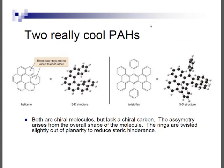Two cool polycyclic aromatic hydrocarbons are helicene and squished fulvene. All carbons are sp2 hybridized — they're fused benzene rings. They cannot have chiral carbons, but the molecules themselves are chiral because helicene twists out of the plane for steric reasons, relieving steric strain. The asymmetry arises in the overall molecular shape, with no chiral carbon present.